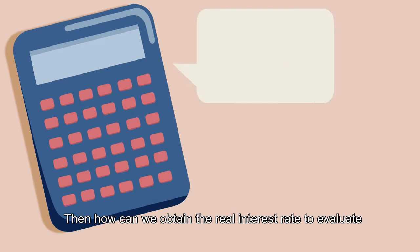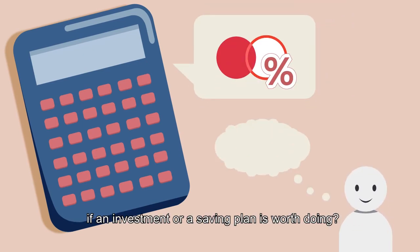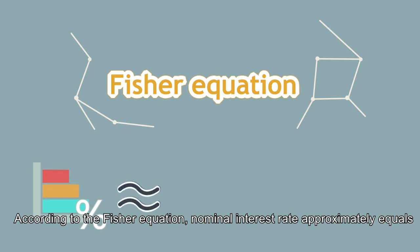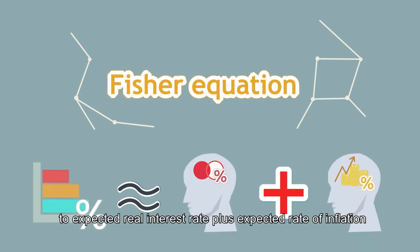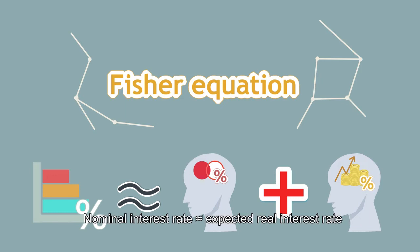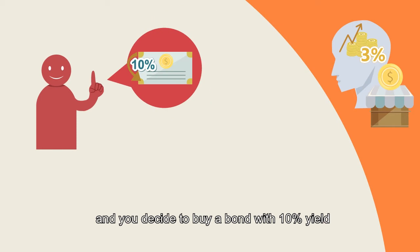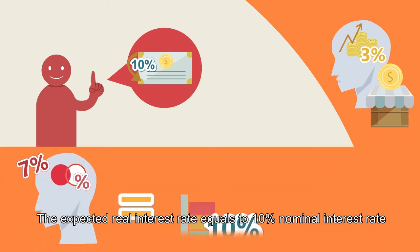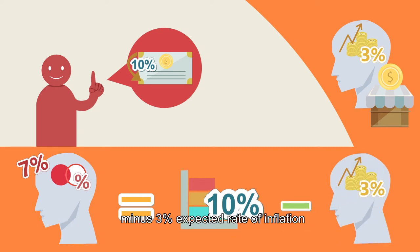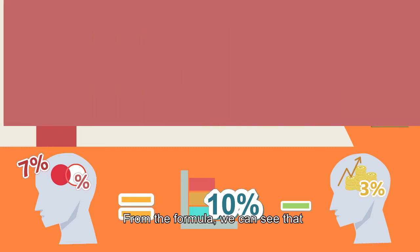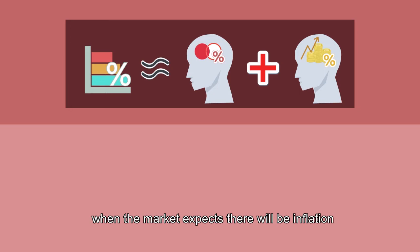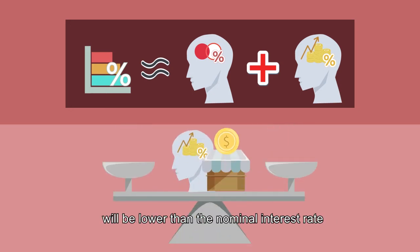How can we obtain the real interest rate to evaluate if an investment or savings plan is worth doing? It's actually very simple. According to the Fisher equation, the nominal interest rate approximately equals the expected real interest rate plus the expected rate of inflation. Assume that the market expected rate of inflation is 3% and you decide to buy a bond with a 10% yield. The expected real interest rate equals 10% nominal interest rate minus 3% expected rate of inflation, which is about 7%. From the formula, we can see that when the market expects inflation, the expected real interest rate will be lower than the nominal interest rate.